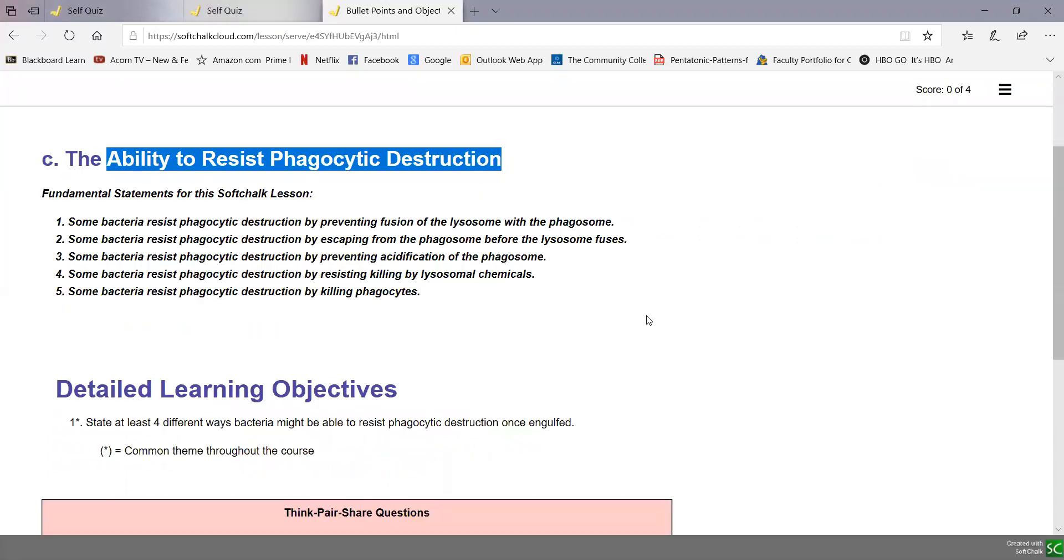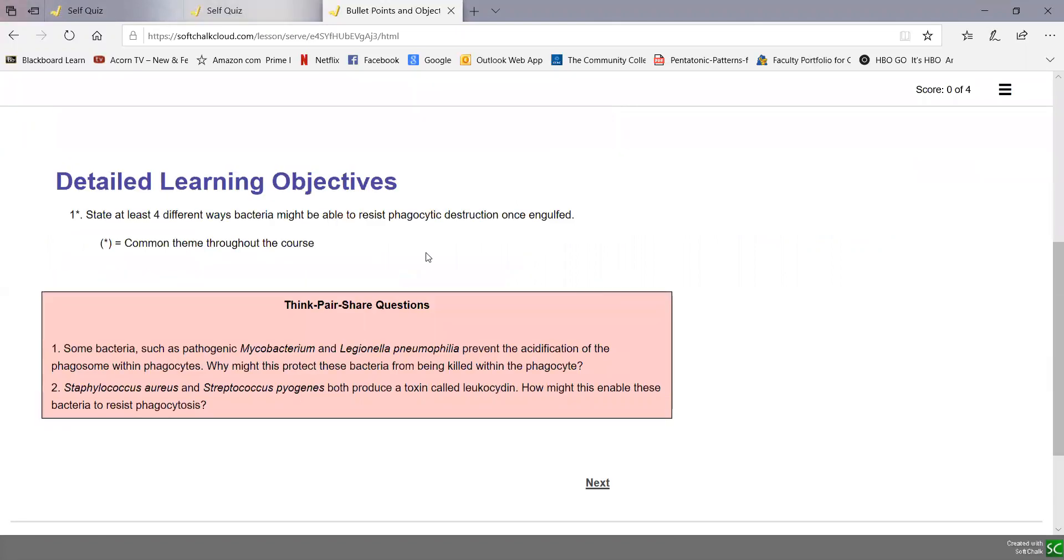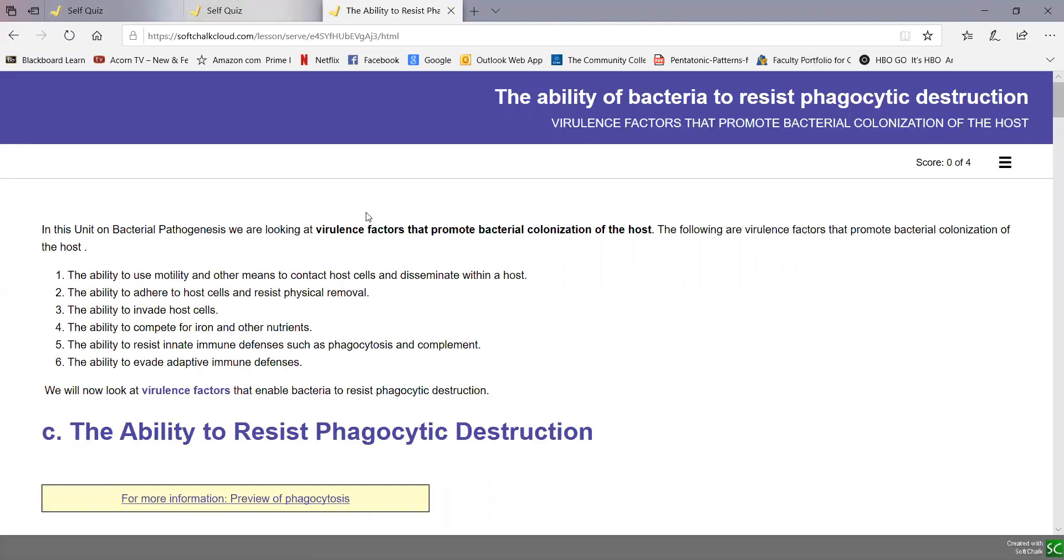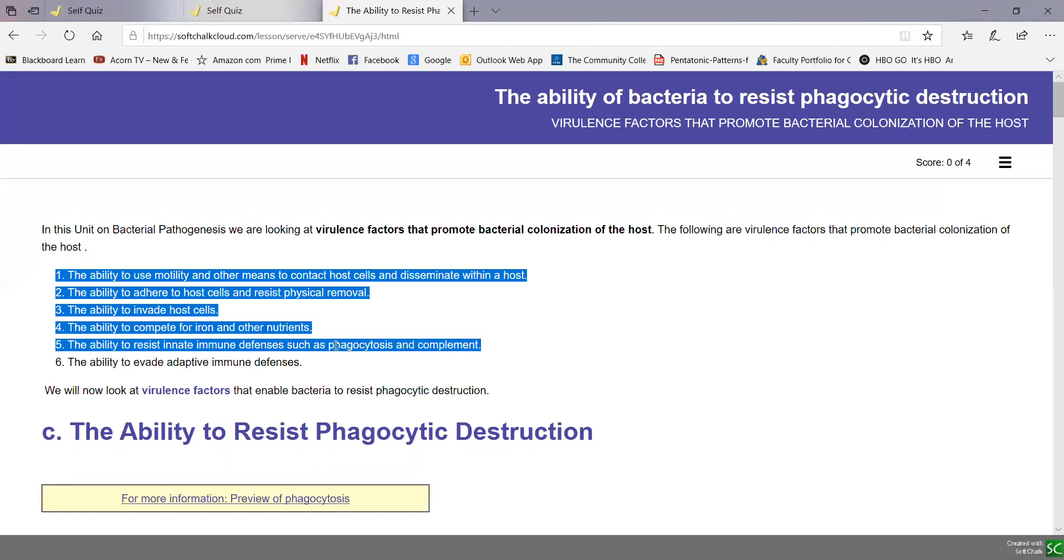There's your bullet points for this soft chalk lesson and your objectives you need to know for the Unit 3 exam. This is still part of the topic of virulence factors that promote bacterial colonization of the host. When bacteria colonize the host, they're establishing themselves. We've looked at five factors that promote colonization.